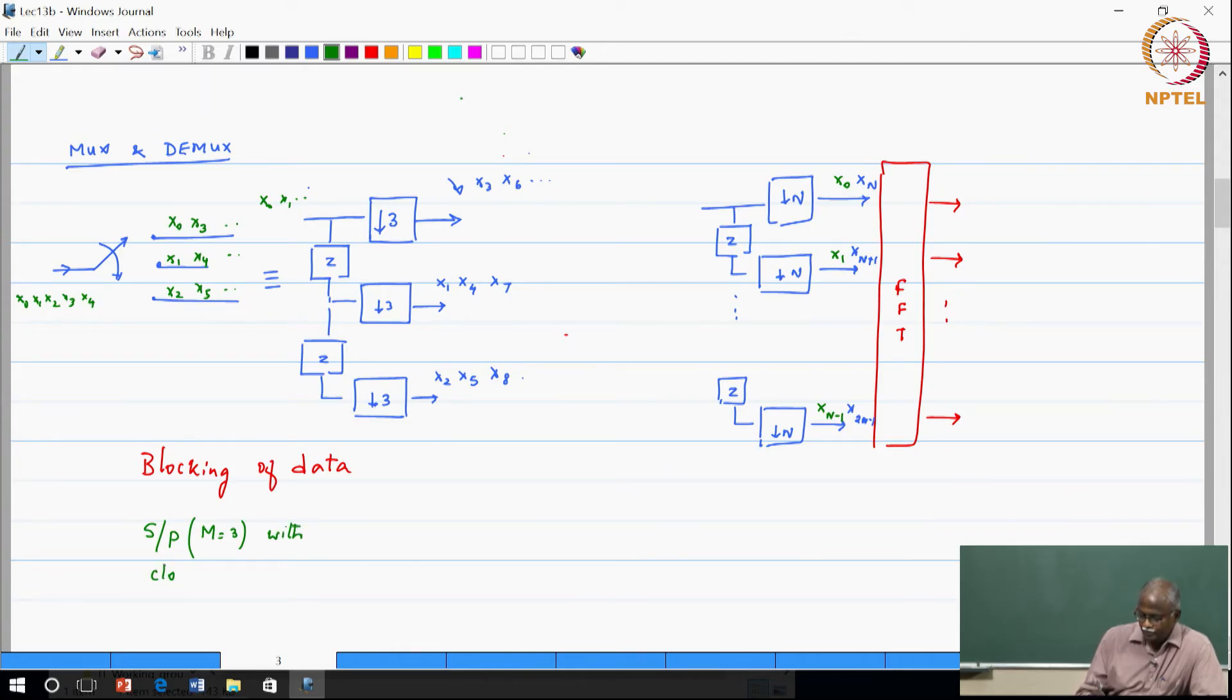So there is a shorthand notation that we use and maybe it is good for you to keep in mind that if I write down SPM then basically it refers to this structure with M channels. So serial to parallel converter, here in the conventional way of blocking of data, that is X0, X1, X2, X3, X4 and so on.